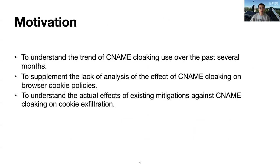Synonym cloaking is already a problem that many people pay attention to, and there are already some studies on its spread. Compared to existing studies, we are most focused on the impact of synonym cloaking on cookie exfiltration by blurring a range-based policy, which is a crucial part of website security. The motivations for our work include three points: first, to understand the traits of synonym cloaking used over the past several months; second, to supplement the lack of analysis of the effect of synonym cloaking on browser cookie policies; and third, to understand the actual effects of existing mitigations against synonym cloaking on cookie exfiltration.